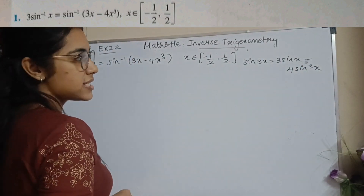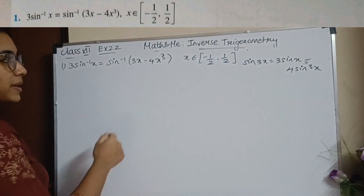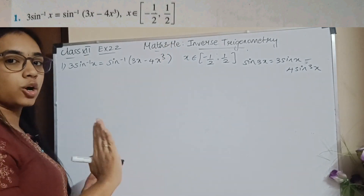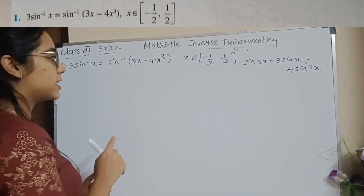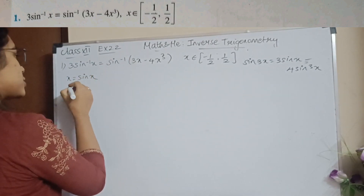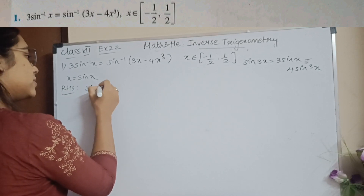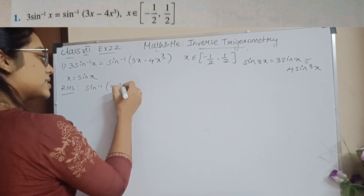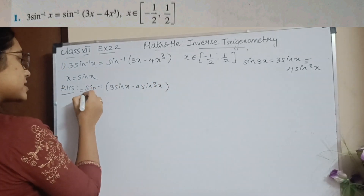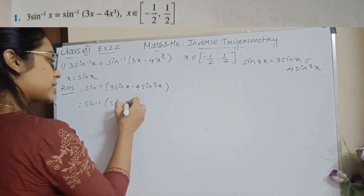Whenever you have sin(3x), you have 3, 4, sin(x), and sin³(x). Inverse trigonometry basically involves making appropriate substitutions. So here, I am going to substitute x = sinθ. The RHS then becomes sin⁻¹(3sinθ - 4sin³θ), which is sin⁻¹(sin3θ).